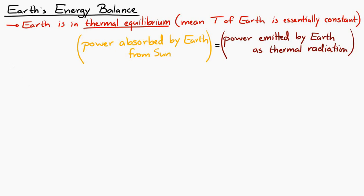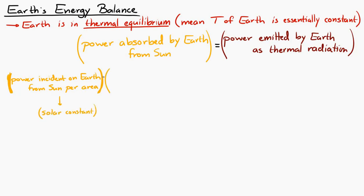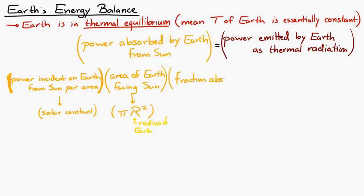Let's write down an expression for the power absorbed by the Earth. The power absorbed equals the power incident on the Earth from the Sun per area — which is the solar constant — times the area of the Earth facing the Sun, which is πr², where r is the radius of the Earth, times 1 minus the albedo of the Earth. That gives us the power absorbed by the Earth.